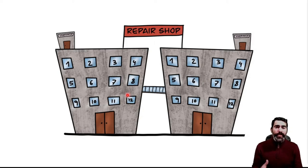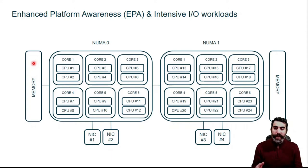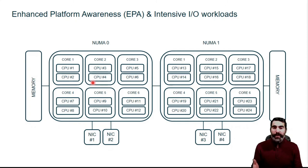Why am I using this example? Because that's exactly what happens by default when you run an application in a server. This is a server with two processors. The processors are connected between them. Each processor has access to memory and to network interface cards. The thing is that if we run an application here, by default the operating system scheduler is going to tell it to run for a certain time on one CPU, then on another, then on another, and we keep changing.